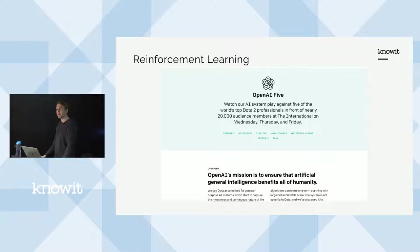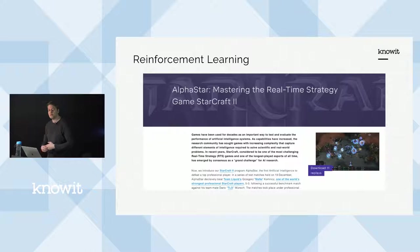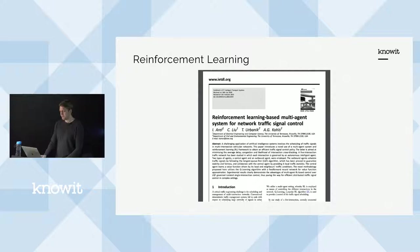OpenAI made OpenAI Five, which are Dota bots. Only two weeks ago they beat OG, which is the current world champion of Dota 2. And then DeepMind made an agent that plays StarCraft 2. I don't know if they beat the world's best players, but they beat really good players at least.